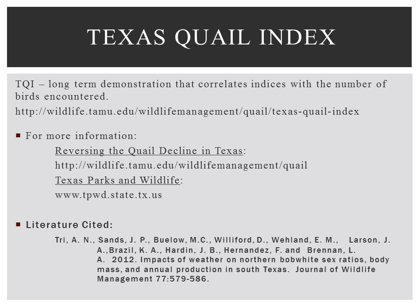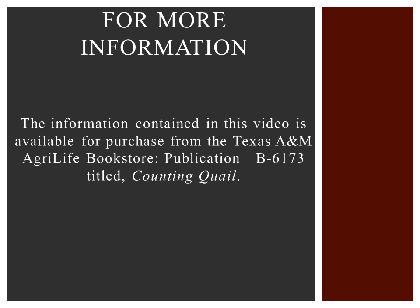Texas Quail Index. The TQI is a long-term demonstration that uses several methods to correlate these indices with the number of birds encountered during the hunting season. The TQI website contains preliminary results and also has protocols and data sheets for each of the techniques described. For more information on quail population surveys or the Texas Quail Index, contact your county extension agent or local Texas Parks and Wildlife biologists, or visit the websites listed below. The information contained in this video is available for purchase from the Texas A&M AgriLife Bookstore, publication B6173, titled Counting Quail.